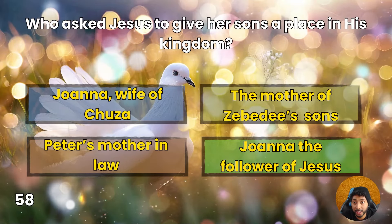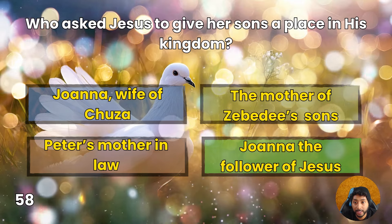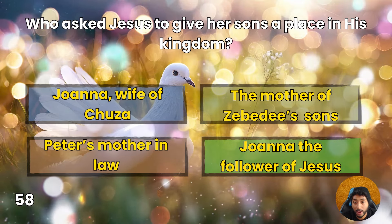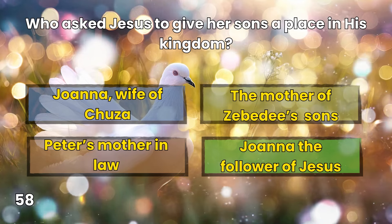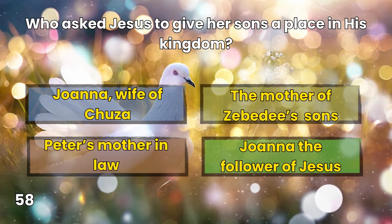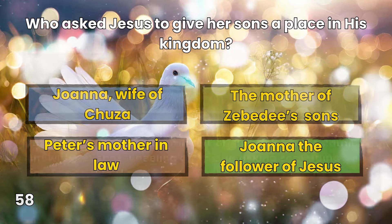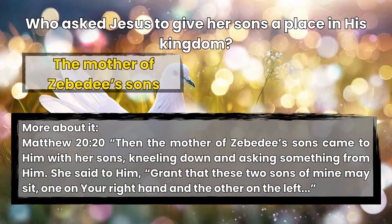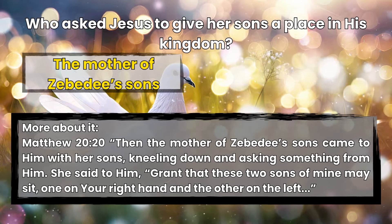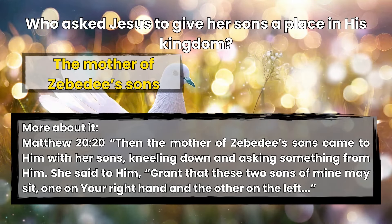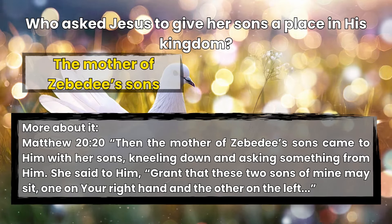Question 58: Who asked Jesus to give her sons a place in his kingdom? Joanna wife of Chuza, the mother of Zebedee's sons, Peter's mother-in-law, or Joanna the follower of Jesus? The mother of Zebedee's sons. Matthew 20 — Then the mother of Zebedee's sons came to him with her sons, kneeling down and asking something from him. She said to him, 'Grant that these two sons of mine may sit, one on your right hand and the other on your left.'